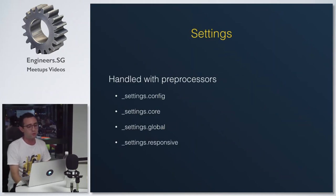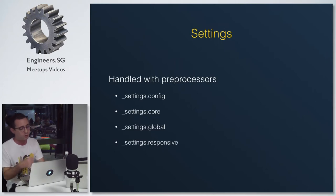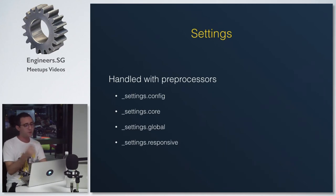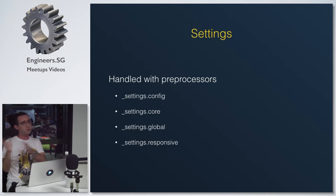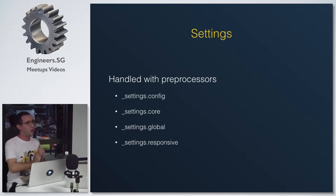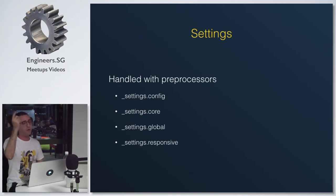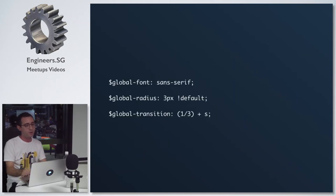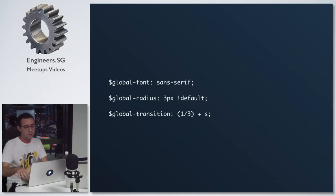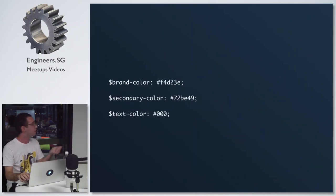Settings is where you set all values that will be read by all other files. In settings we have config, core, global, and responsive. The global setting supports localization for different markets — for example, launching to the Hong Kong market with a different color schema. You only need one settings-core file and change all values in one shot. Settings include global font, radius, transitions, brand color, secondary color, and text color.